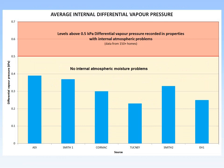Looking at the properties as a whole, there were no internal atmospheric moisture problems reported. A differential vapour pressure of less than 0.5% indicated all properties were fine — not problem properties. There was no vast difference in internal atmospheric moisture levels between any of the properties.